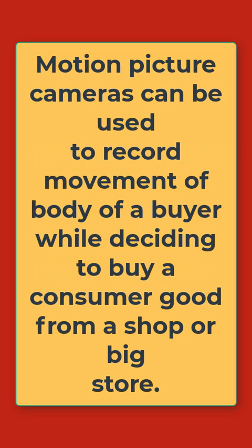Motion picture cameras can be used to record the movement of the body of a buyer while deciding to buy or consume a good from a shop or big store. The influence of packaging or the information given on a label would stimulate a buyer to perform certain physical movements, which can easily be recorded by a hidden motion picture camera within the shop's walls.